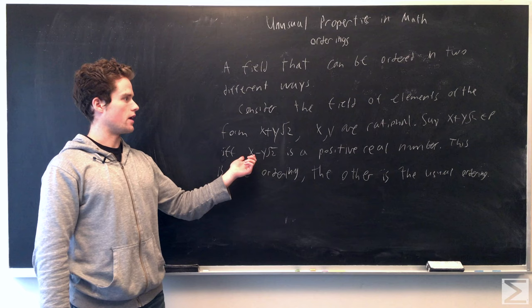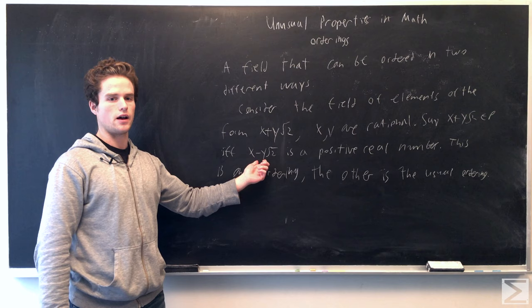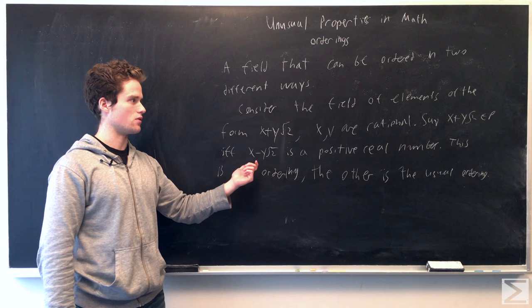And we see this will satisfy our axioms, because if two of these are in P, two of these forms are both positive real numbers. We multiply them together, we get a positive real number. Same for addition, so it's closed under addition and multiplication.